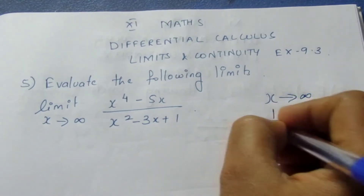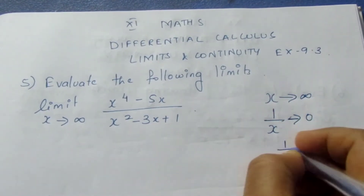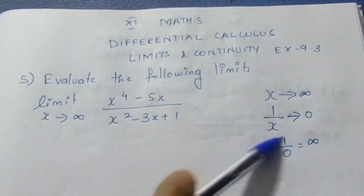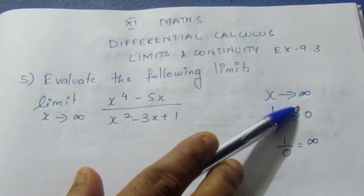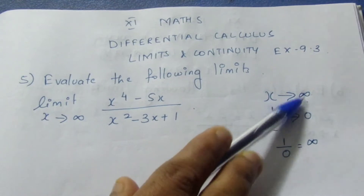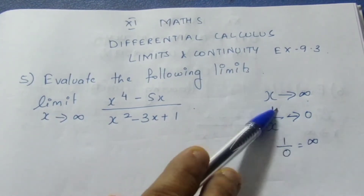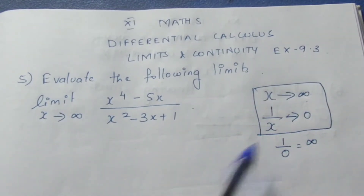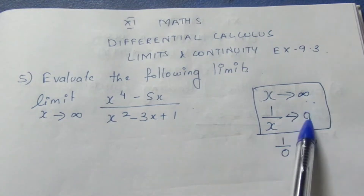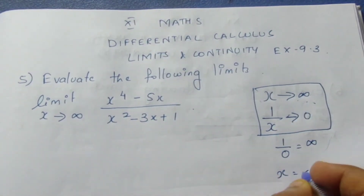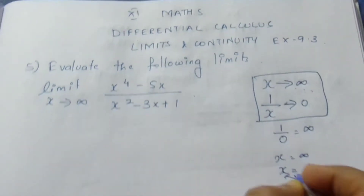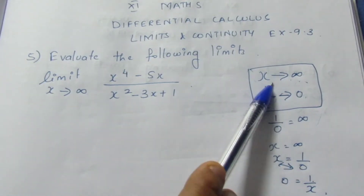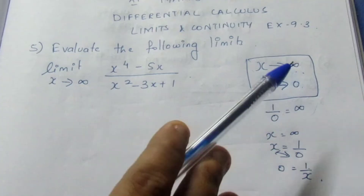Let's say the limit extends to infinity. When x tends to infinity, 1 by x tends to 0. This means 1 by 0 equals infinity. So if x is equal to infinity, x is equal to 1 by 0; cross multiply and 0 is equal to 1 by x. So 1 by x tends to 0. This is how we apply the concept: when x tends to infinity, 1 by x tends to 0.